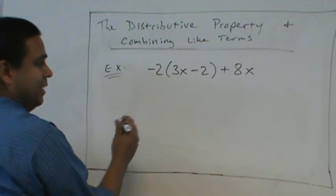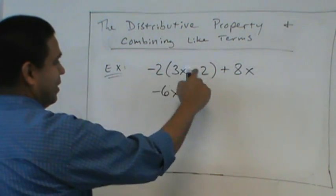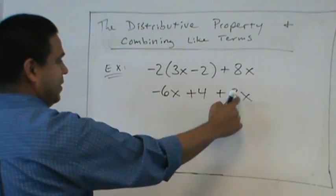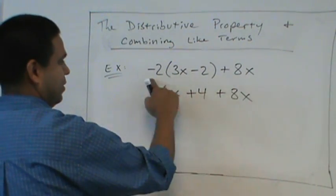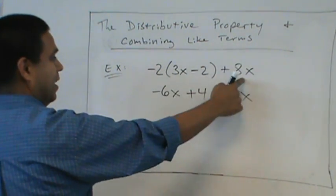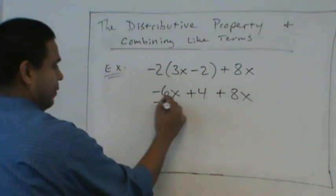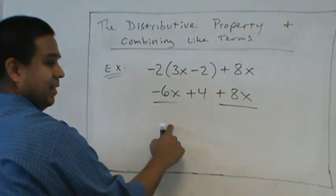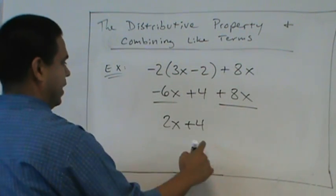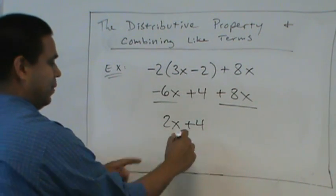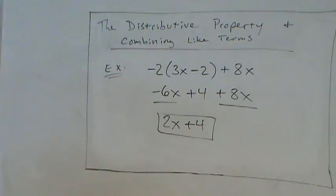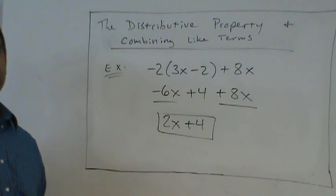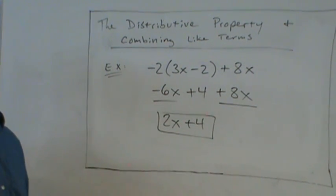Negative 2 times 3x? Negative 6x. Negative 2 times negative 2? Positive 4. And again, we leave this the same. Do not distribute because that's not in the parentheses. We look for our like terms. Negative 6x plus 8x? Positive 2x. Can I combine these? No. We're done. That's it. Questions? No? Nope. Very good. Thank you.